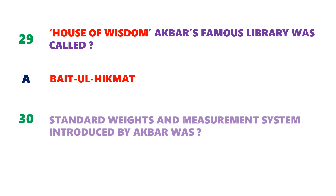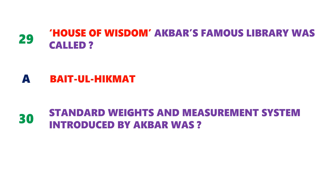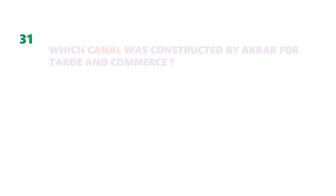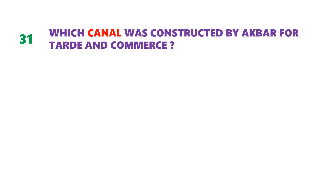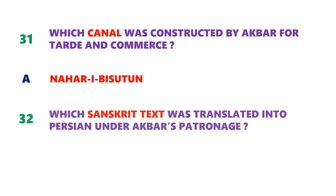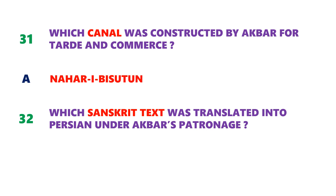Next question: what was the standard weight and measurement system introduced by Akbar? The answer is the Mound system. Question number 31: which canal was constructed by Akbar for trade and commerce? Neher Ibistun was the canal constructed by Akbar for trade and commerce. Next question: which Sanskrit text was translated into Persian under Akbar's patronage? The answer is Ramayana.